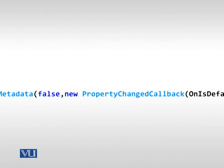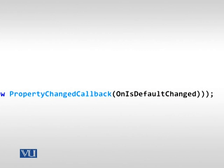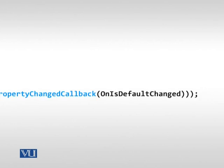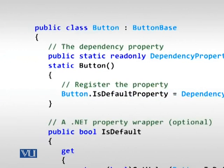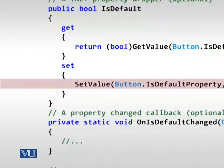اگر کوئی provider بھی value نہ دے رہا ہو تو default value false ہو۔ پھر ہم نے new PropertyChangedCallback دی ہے - OnIsDefaultChanged - یعنی ہم نے delegate pass کیا ہے اور یہ change notification register کر رہا ہے کہ جب property change ہو تو یہ method call ہو جائے۔ اس کے بعد ہم نے ایک property wrapper لکھا ہے جو totally optional چیز ہے، لیکن property wrapper کے multiple فوائد ہیں۔